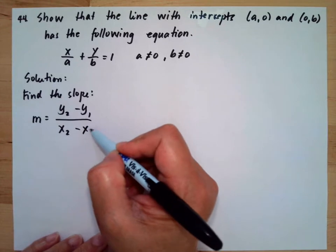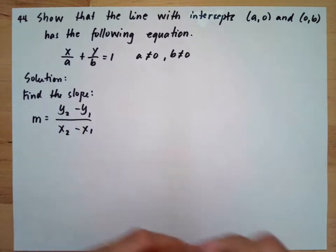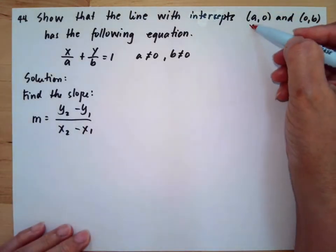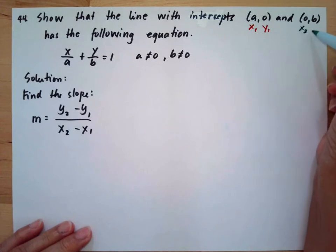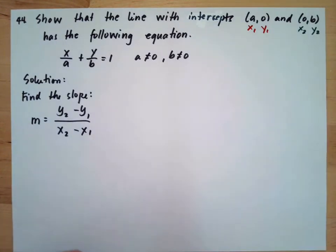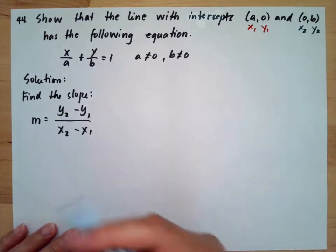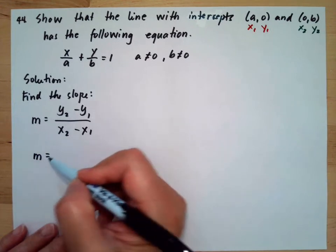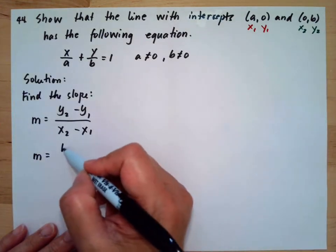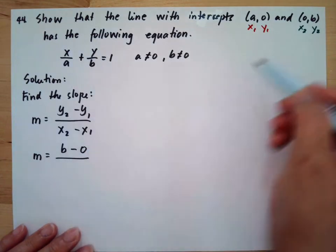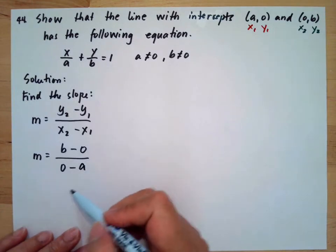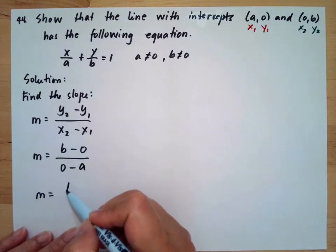We will assign this point as our (x₁, y₁) for our first point, and this will be our (x₂, y₂). We will substitute that into our formula. So y₂ is b, y₁ is 0, x₂ is 0, and x₁ is a.